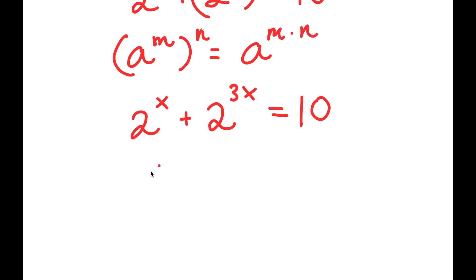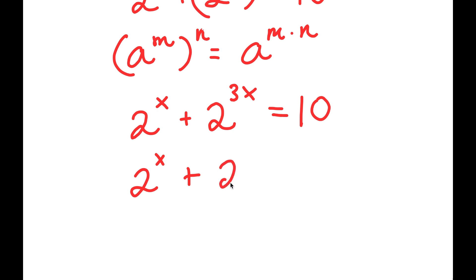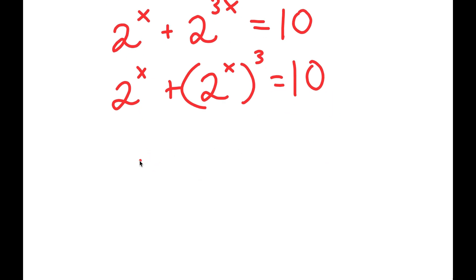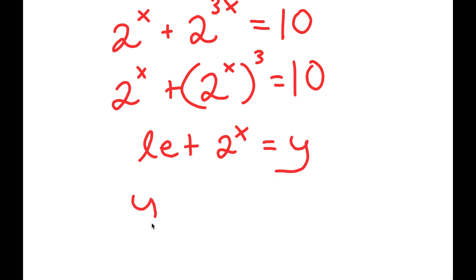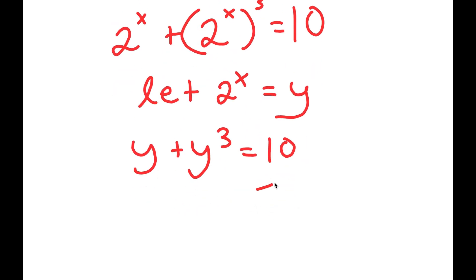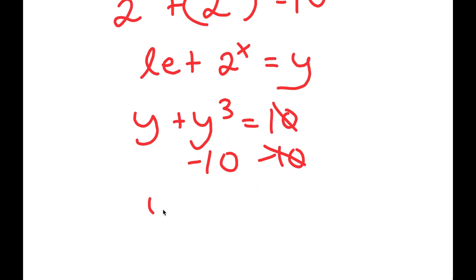I can rewrite this as 2 to the power of x plus 2 to the power of x to the power of 3 is equal to 10. Now I'm going to let 2 to the power of x equal to the variable y. So I get y plus y to the power of 3 is equal to 10. If I subtract 10 on both sides, these two cancel out and I get y to the power of 3 plus y minus 10 is equal to 0.